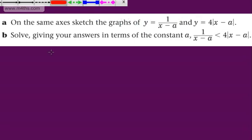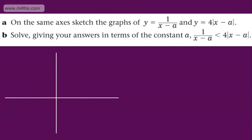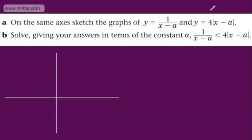Let's consider the first part. What we've got is a reciprocal function that's been moved a units to the right. If we have 1/x, and move that two units to the right, what we get is 1/(x - 2).